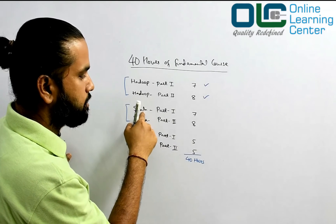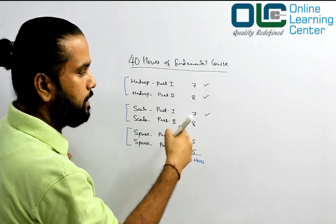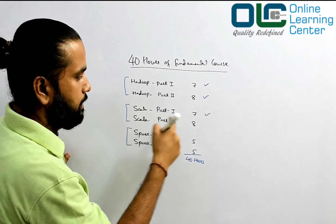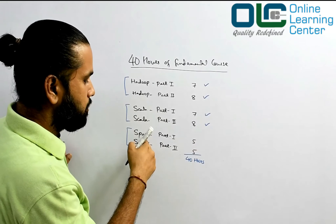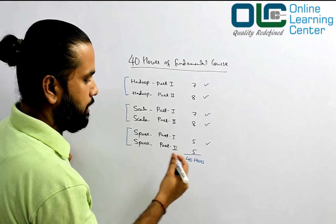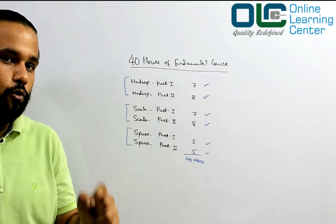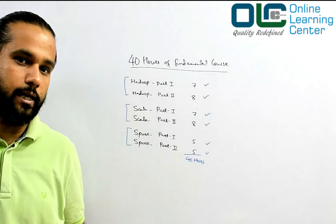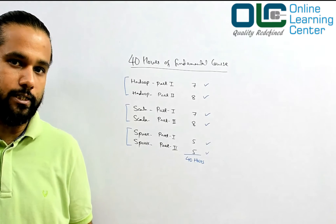You then start Scala part one of seven hours, complete it, produce your certificate to us, and you get another eight hours. Then start Spark part one of five hours, produce your certificate and get access to the next part.